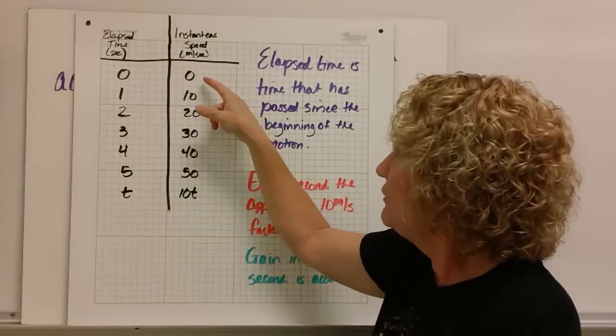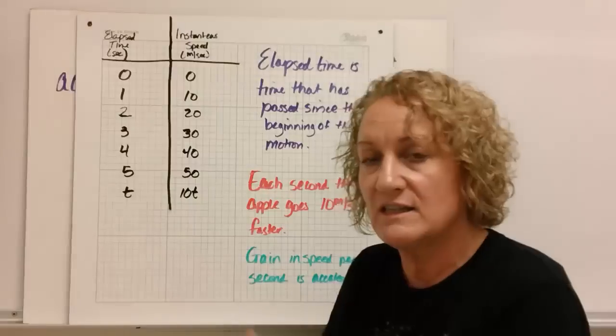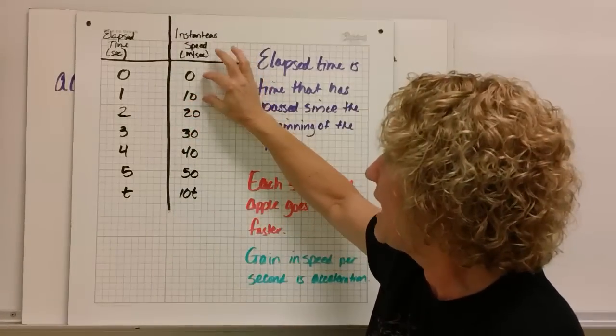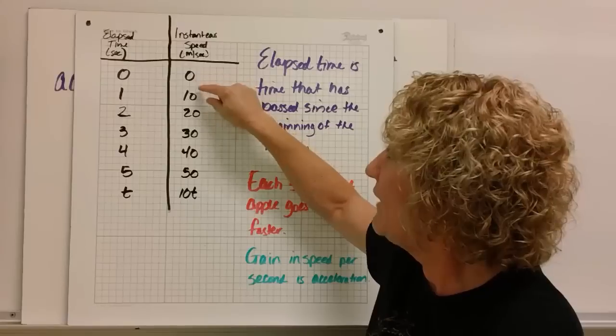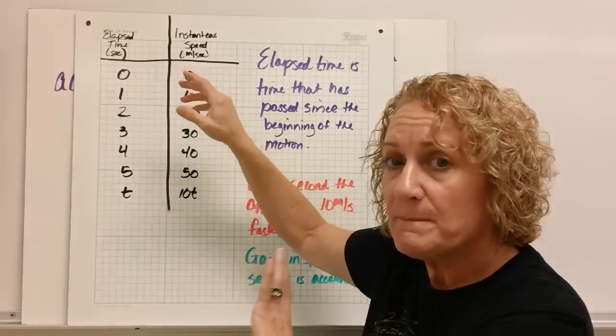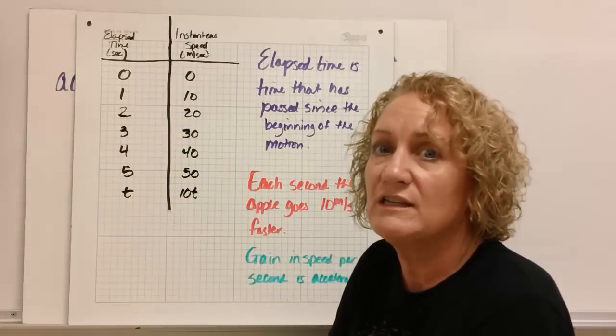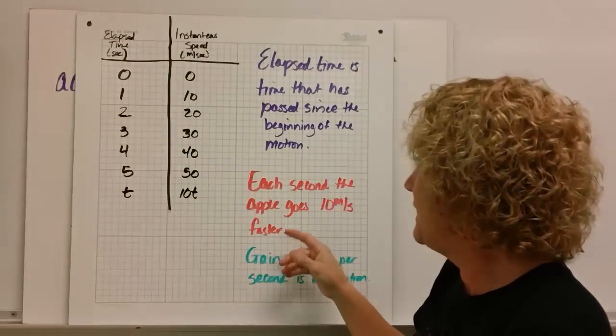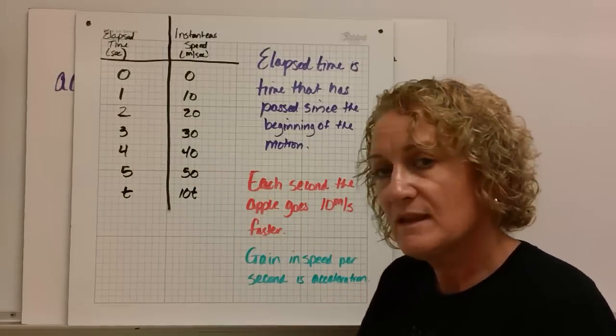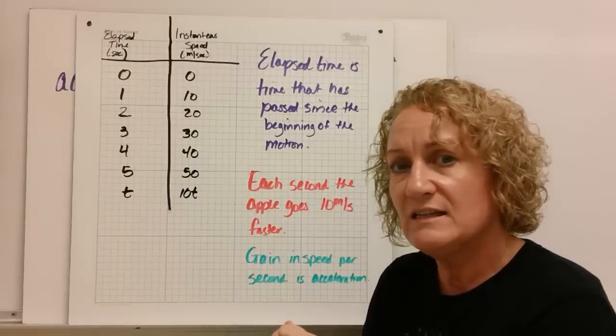It looks to me like every second, the apple goes 10 meters per second faster than it did the second before. We use instantaneous speed instead of average speed, because average speed would be different. Every second, it goes 10 meters per second faster. That means we have acceleration. That gain in speed per second, that's acceleration.